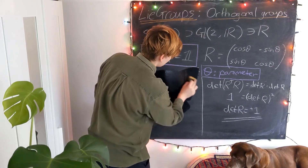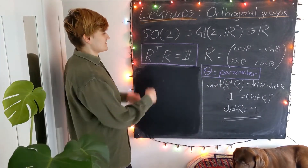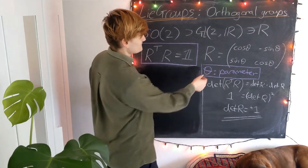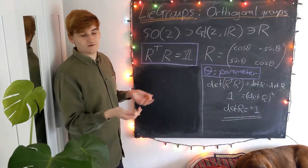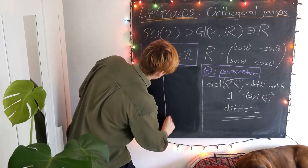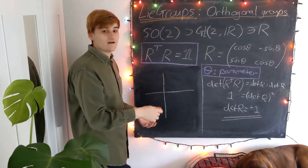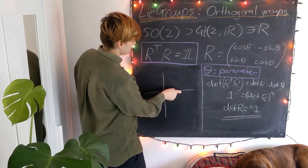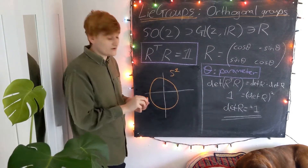We know that SO(2) is a Lie group, so it should be describable as a manifold. How do we realize this SO(2) group as a manifold? Well, we essentially only have one coordinate, which is the theta parameter, so this is going to be a one-dimensional manifold. The only possible one-dimensional manifolds are either a circle or a line segment. Let's see how this arises.